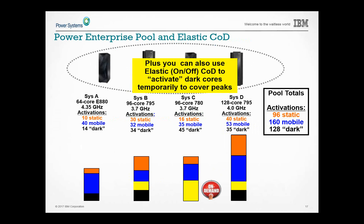Slide 17 points out that not only do you have mobile, but you still also have elastic or on-off capacity. You can use any or all of these together — trial, on-off, mobile, IFLs. There are lots of different flexibility options, and we'll show screenshots on the HMC of how your cores are actually lit up.